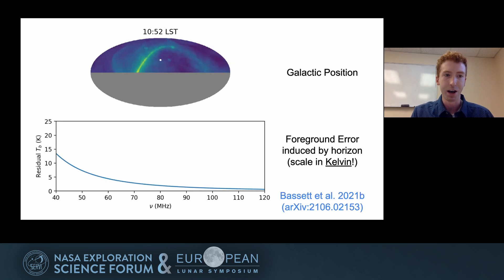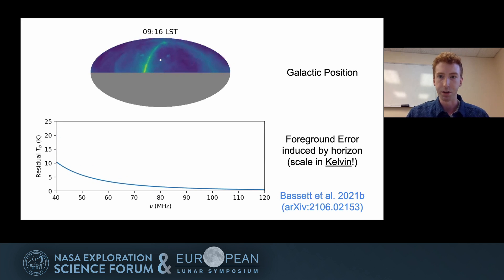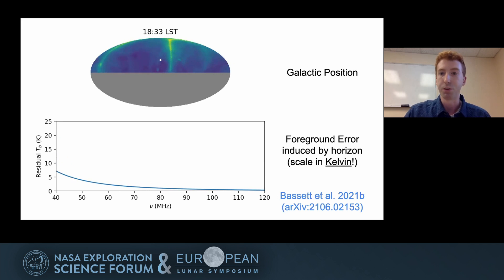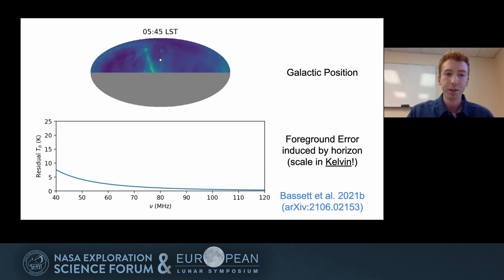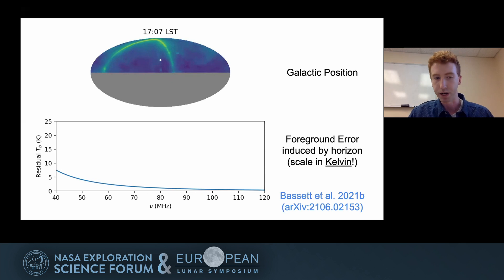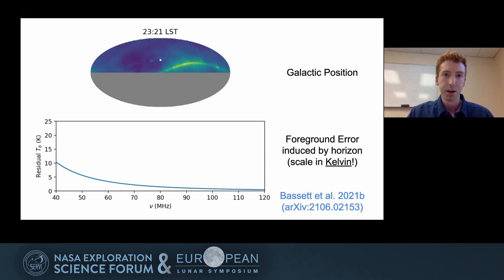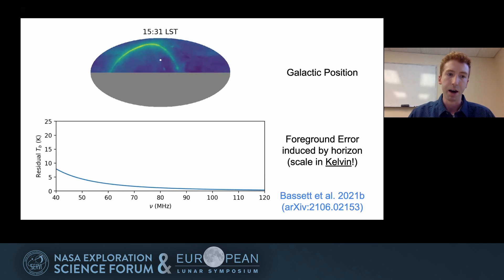The first thing I'll point out about this residual is that the y-axis scale is in Kelvin — orders of magnitude larger than the magnitude of the 21 centimeter signal, which is expected to be at most in the hundreds of millikelvin. So even just the residual imposed by the horizon is much, much larger than the signal itself. This is clearly a very large effect. While the frequency dependence is pretty simple — close to a power law, because most foreground emission is synchrotron radiation — there's this complex time dependence. When the plane of the galaxy is very close to the horizon, this residual is maximized, and when it's far above or below the horizon, the residual is minimized.